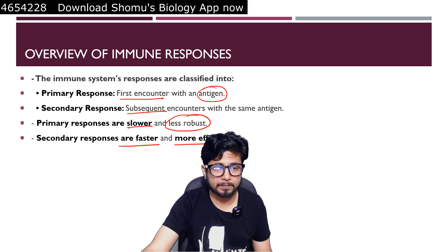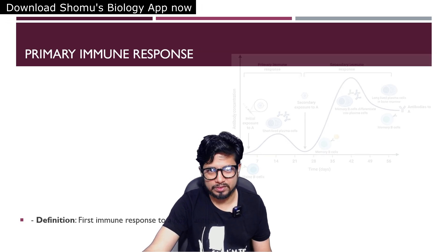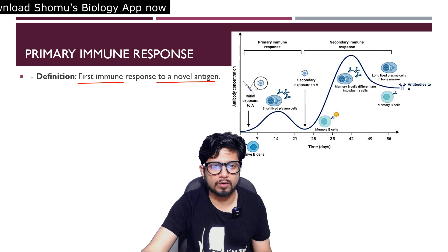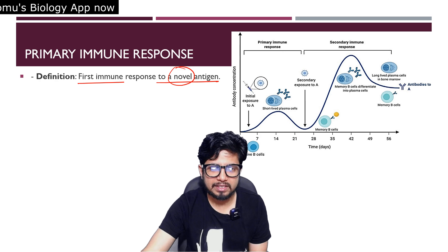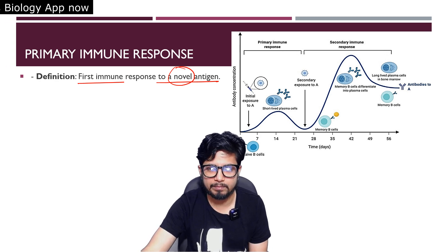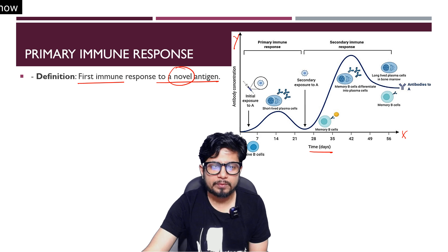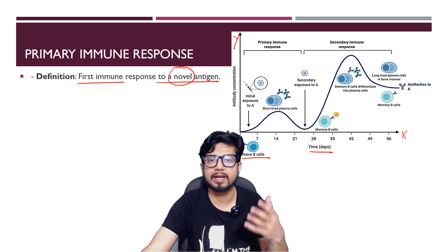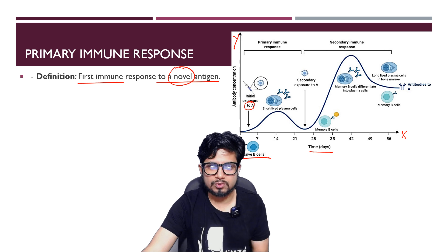The definition of primary immune response is the first immune response to a novel antigen — an antigen unknown to the body before that day. In this diagram, we have time on the x-axis and antibody concentration on the y-axis. Our immune system cells — the naive B cells — are present but not ready to produce any antibody; they don't get any signal and don't know how to respond. But upon initial exposure to antigen A, such as a virus, the body starts showing the primary immune response.